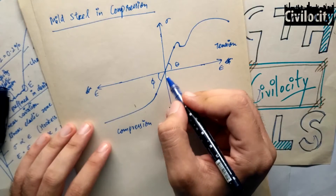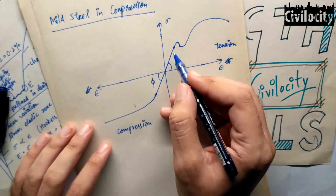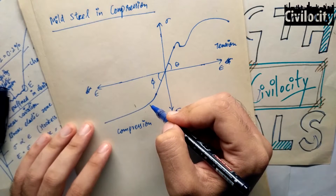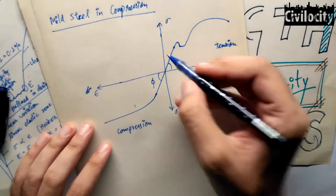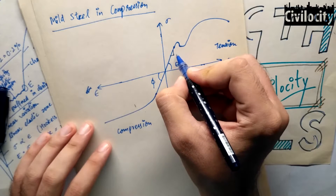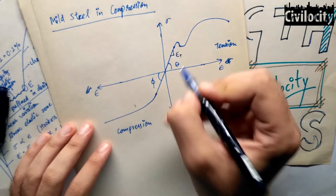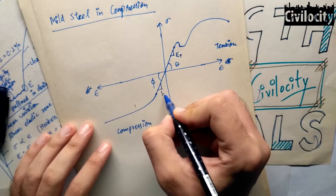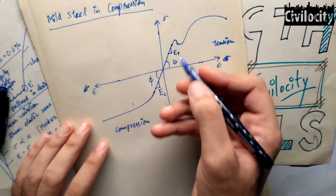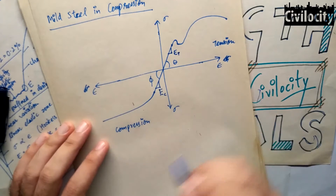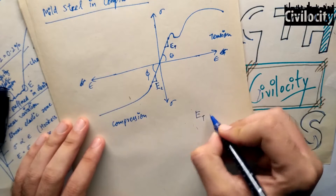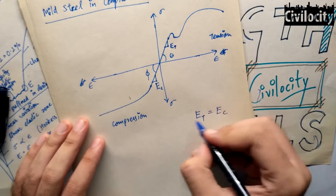In our previous video, we talked about mild steel specimen in tension. Now let's see how a mild steel specimen behaves in compression. Let's draw the stress-strain curve of mild steel in compression. If mild steel is subjected to compression instead of tension, the stress-strain curve will essentially be the same through its initial straight line portion. The slope is the same in both tension and compression, and since the slope is the same, the modulus of elasticity in tension will also be equal to the modulus of elasticity in compression.